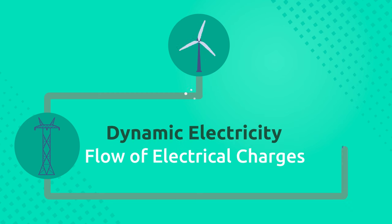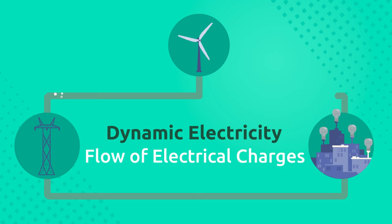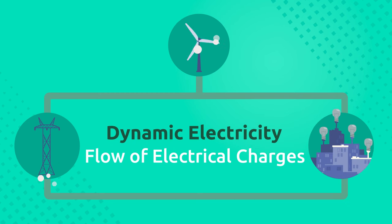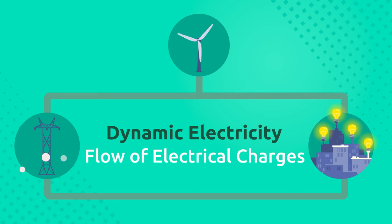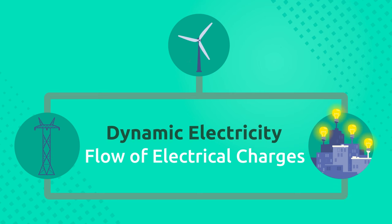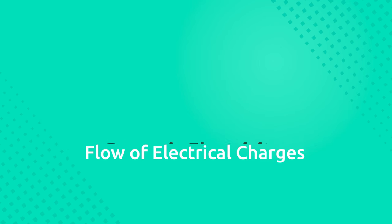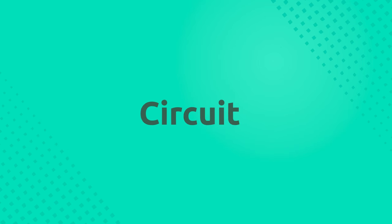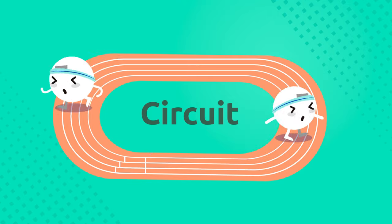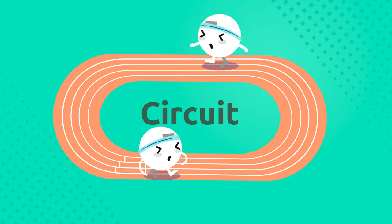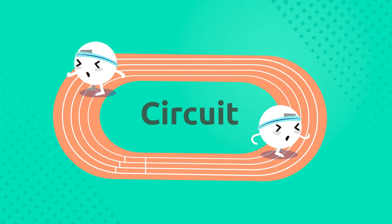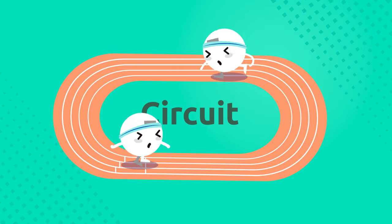Dynamic electricity is the flow of electric charges — just as water flows in a river, so do electrical charges in a cable. In order for electrical charges to flow continuously, we need a circuit. A circuit is a closed path in which electrical charges travel.